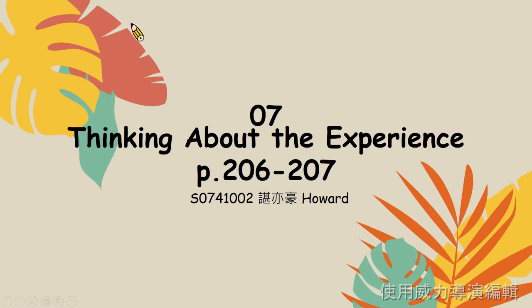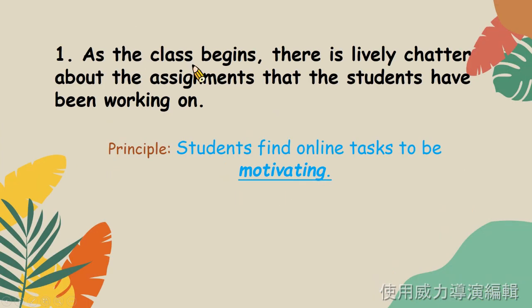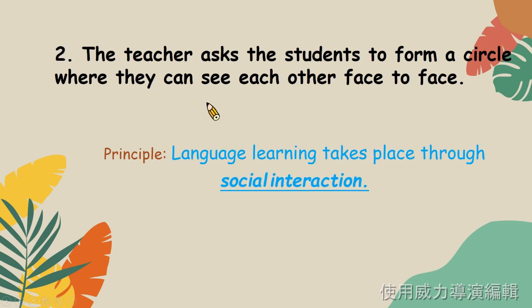大家好,我是二號Howard陳一豪,接下來是我報告的部分。 Point 1: As the class begins, there is lively chatter about assignments that the students have been working on. Students find online tasks to be motivating. 在課堂的一開始,學生在一開始會閒聊到自己做的功課,對大部分學生來說,用網路做功課本身就是個激勵人的挑戰。 Point 2: The teacher asks the students to form a circle so they can see each other. Language learning is through social exchange. 老師會要求學生圍成一圈,好讓對方看到彼此。就學習語言來說,同學一起互動效果是最好的,畢竟一個人單槍匹馬學好一種外語是比較困難的,效果也是相對打折的。